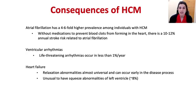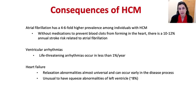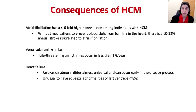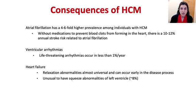Early diagnosis and recognition of HCM are important because the long-term consequences are significant. Atrial fibrillation is a common rhythm abnormality, occurring at a four- to six-fold higher prevalence in people with HCM compared to the general population. Without anticoagulation to prevent blood clots, atrial fibrillation carries an annual stroke risk of about 10% to 12%. There is also a risk of ventricular arrhythmias — life-threatening rhythm abnormalities from the bottom chambers — occurring at less than 1% per year, though we want to identify those at highest risk.